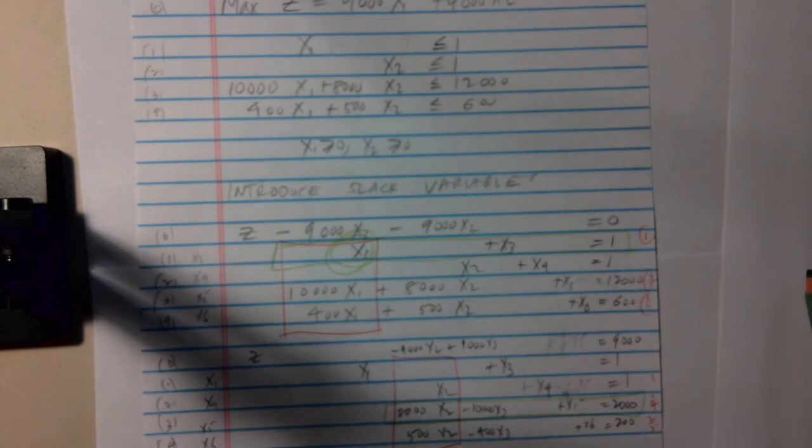So in the first iteration of the simplex method, I have these equations. And the basic variables are the ones which are in a column where the variable only occurs once and with coefficient 1. So X1, X3, X4, X5, X6, these are now my basic variables.